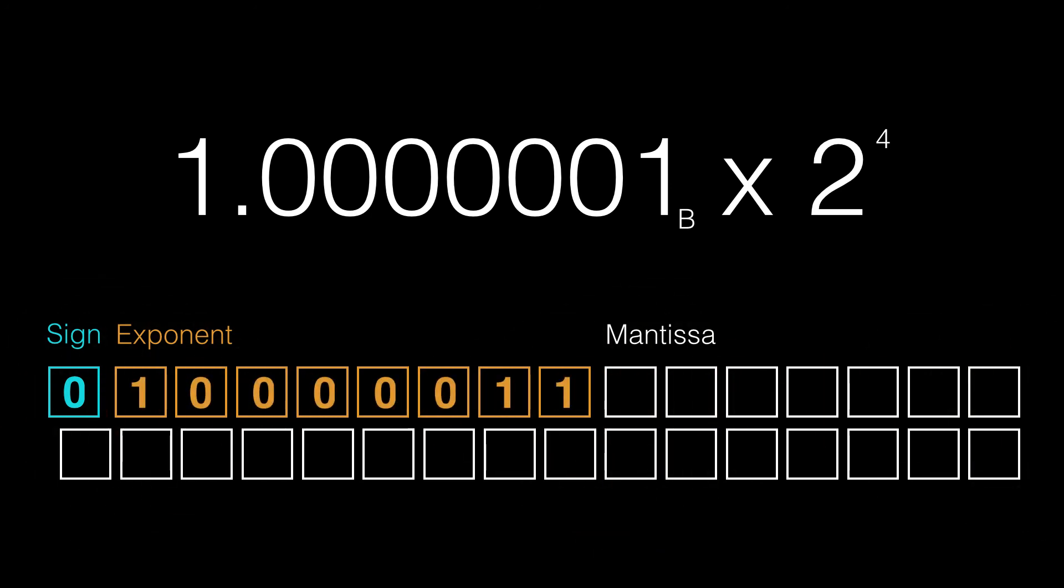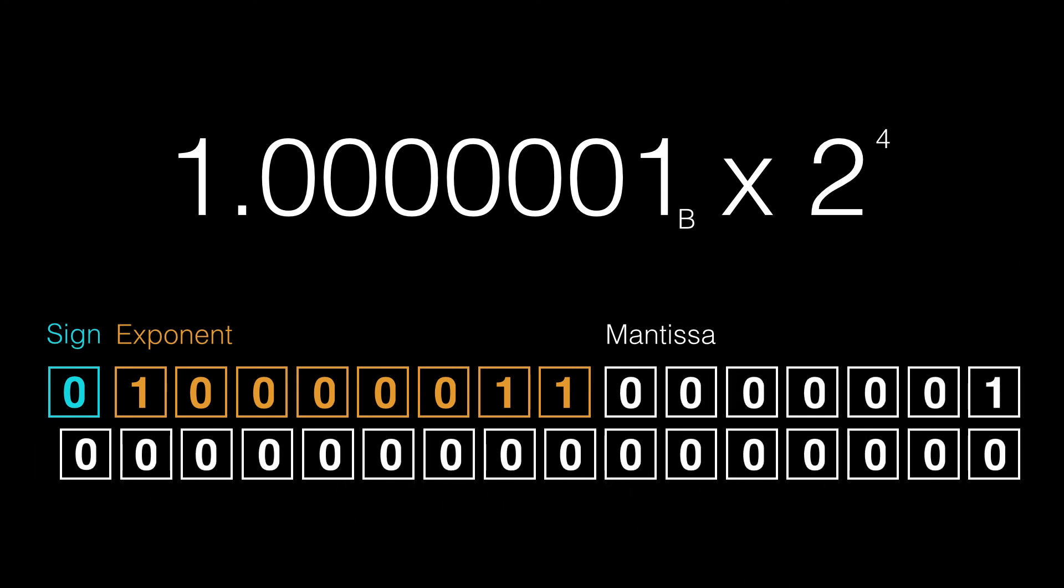The last bit is the mantissa. Our scientific binary number is 1.0000001. We know the first digit is a one, so we don't bother storing that. We just store the 0000001 for the mantissa. And the rest of the digits are zero. So, there's our final number. And that is what gets stored into a float.